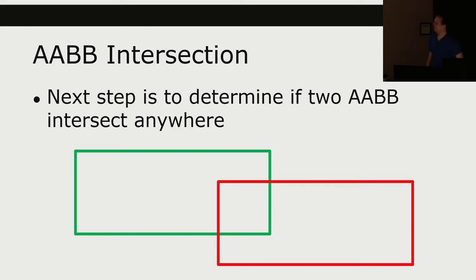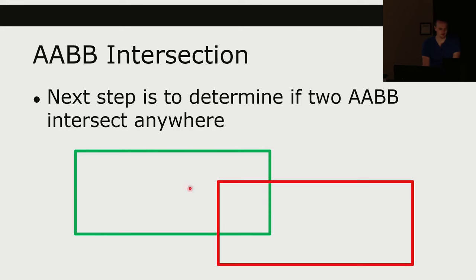The next thing is to determine if two axis-aligned bounding boxes intersect — a Boolean check. You might say: check all 16 line segments to see if any line segment of one intersects with any of another. But what's wrong with that algorithm? One rectangle might be entirely inside the other — none of the line segments would intersect — so that algorithm doesn't work. We could check if all four red corners are inside the green one, but that's four checks with four if-statements per point, so 16 if-statements. Let's see if we can do better.